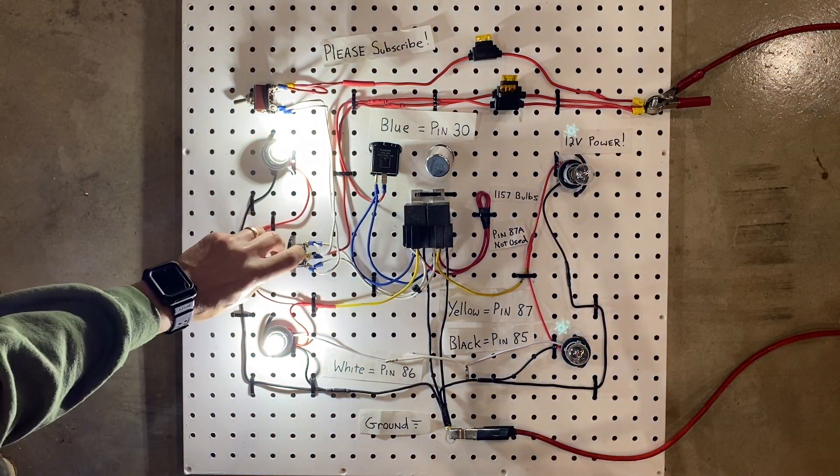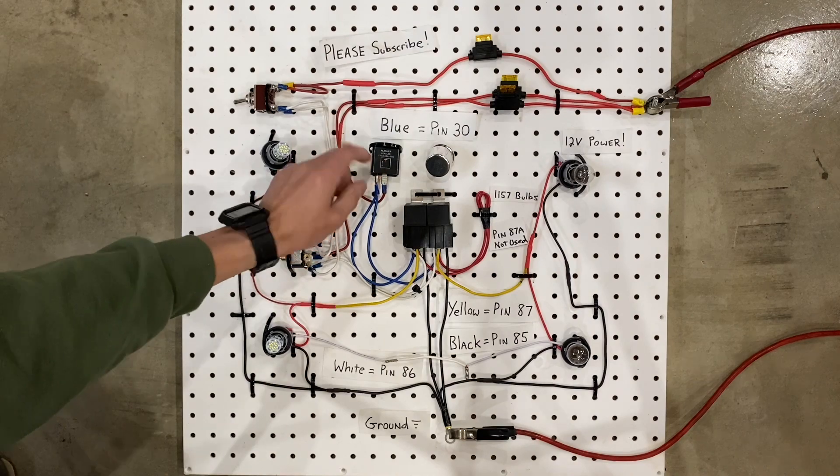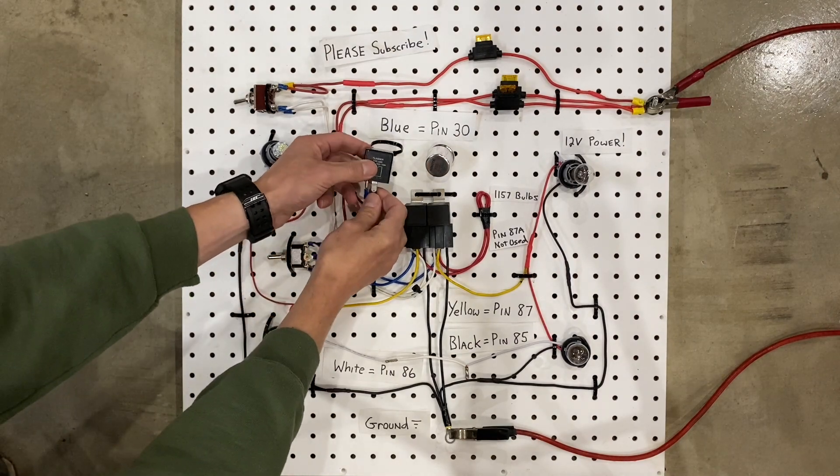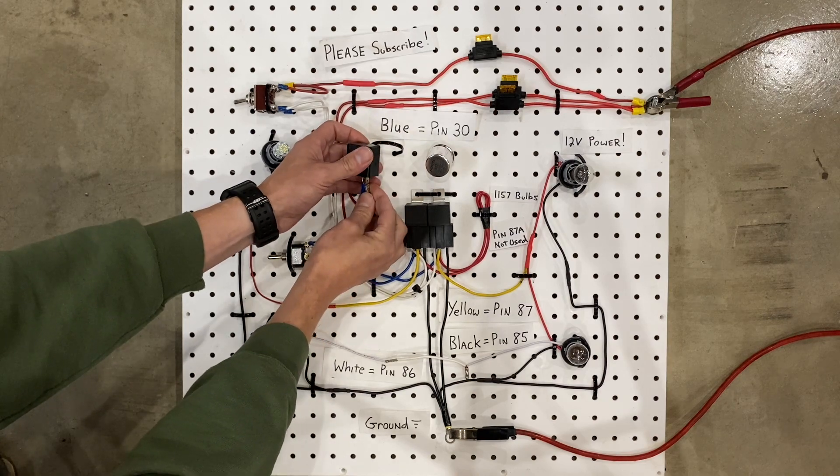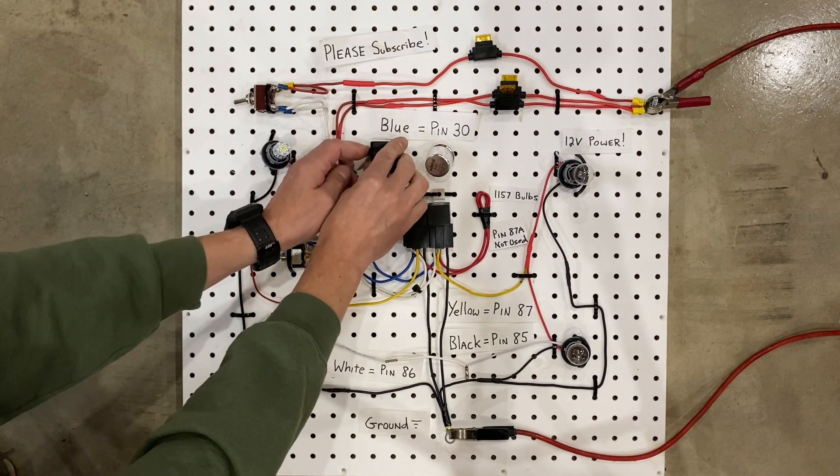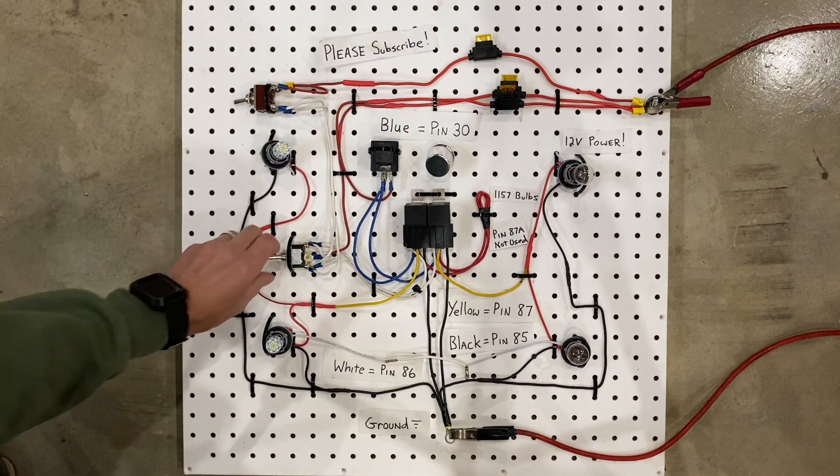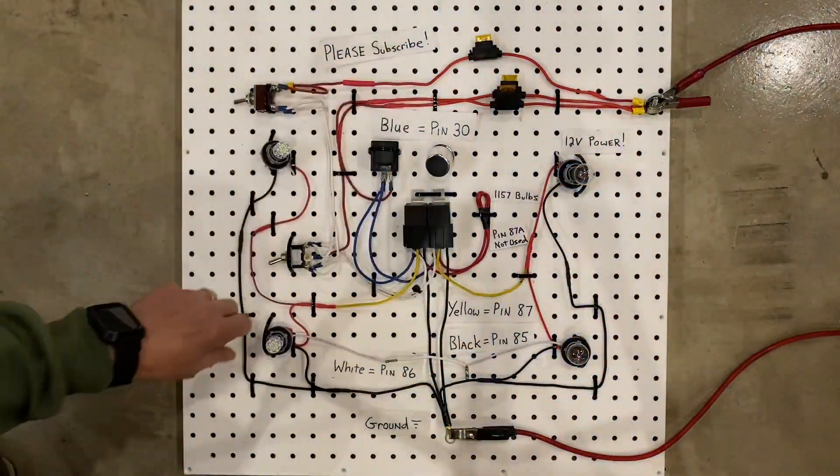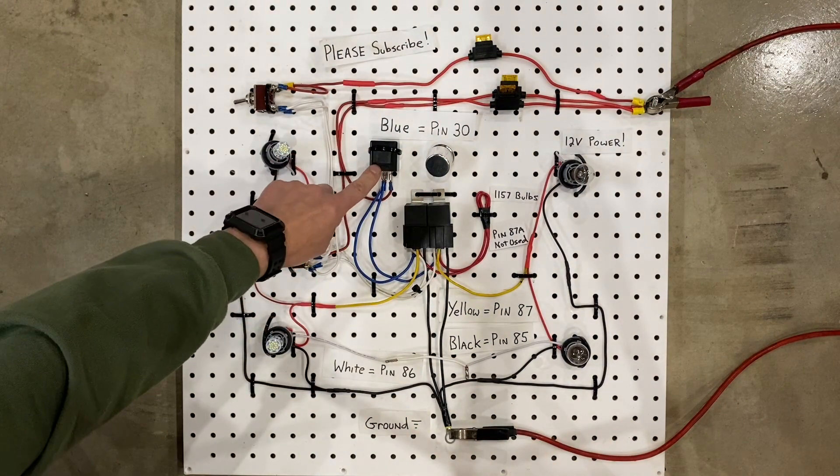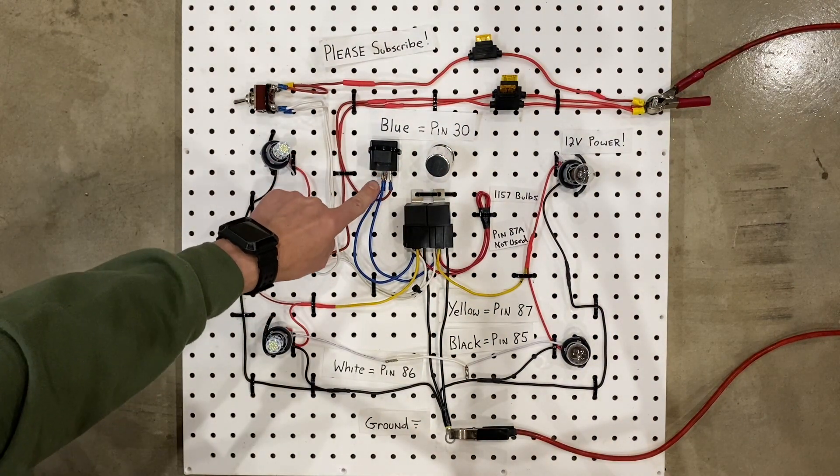So these style flashers, the wires have to be hooked up the right way, because if they're not, the circuit doesn't work right. It gets mad and it no longer flashes. So now that I've swapped the wires back, we now have flashers again.